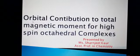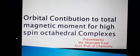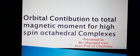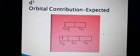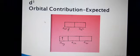Hello students, today we will study about the topic orbital contribution to total magnetic moment for high spin octahedral complexes. In the last video lecture we studied about the low spin octahedral complexes, so now we will study about high spin octahedral complexes. In octahedral complexes, the 5 d-orbitals are not degenerate and separate into two sets of orbitals: T2G and EG. T2G has lower energy compared to EG. We will now discuss the orbital contribution for D1 through D9 configurations.